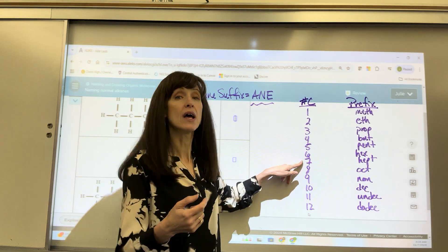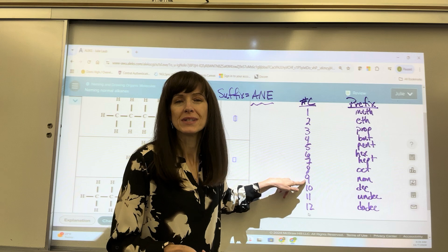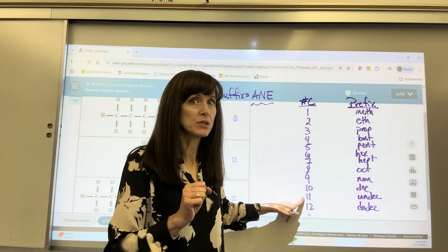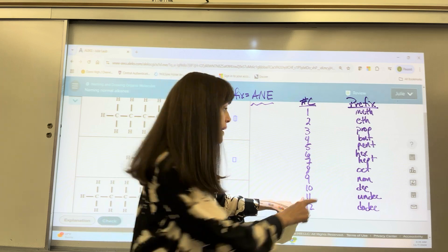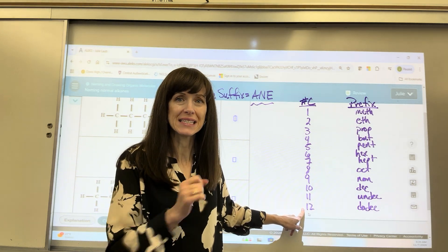6 hex, 7 hept, 8 oct, 9 we say non, 10 dec, 11 might be new to you. It's undec, U-N-D-E-C, and 12 is dodec, D-O-D-E-C.